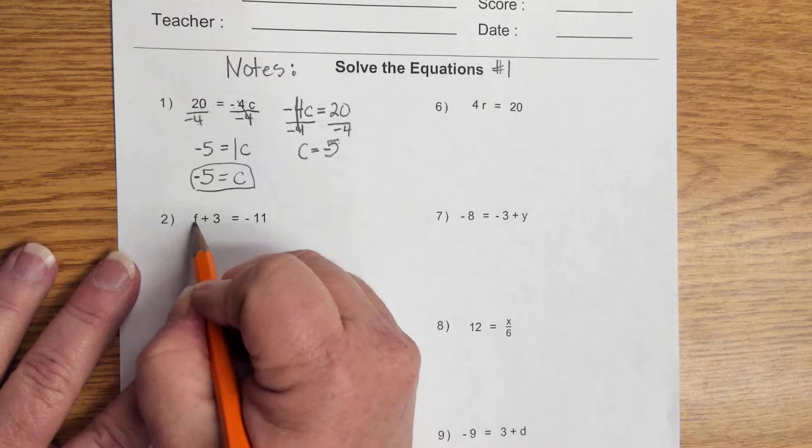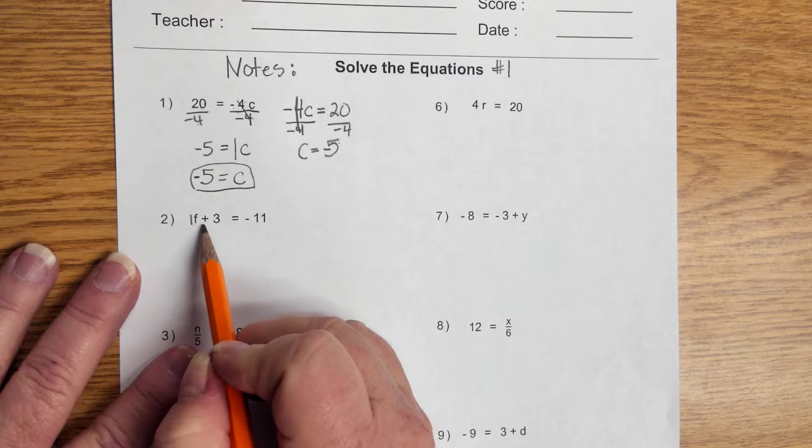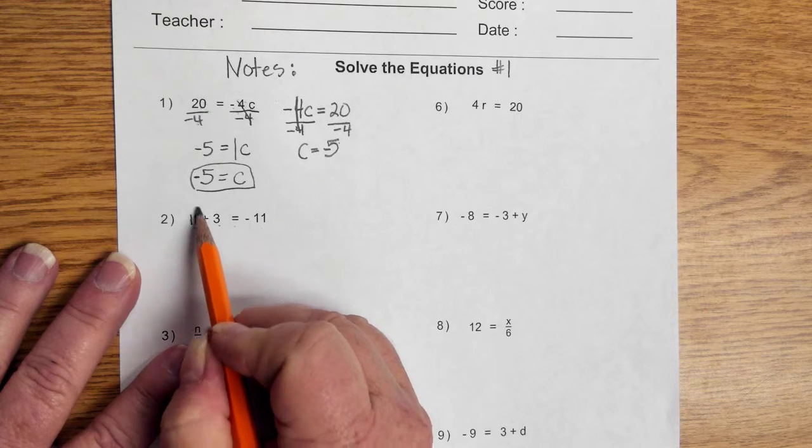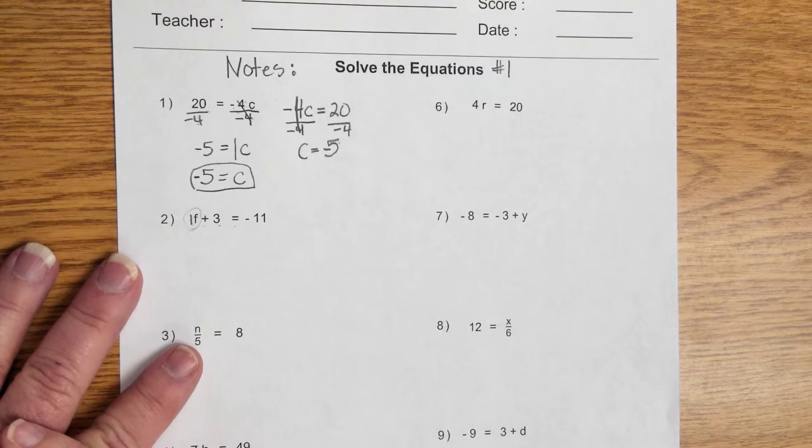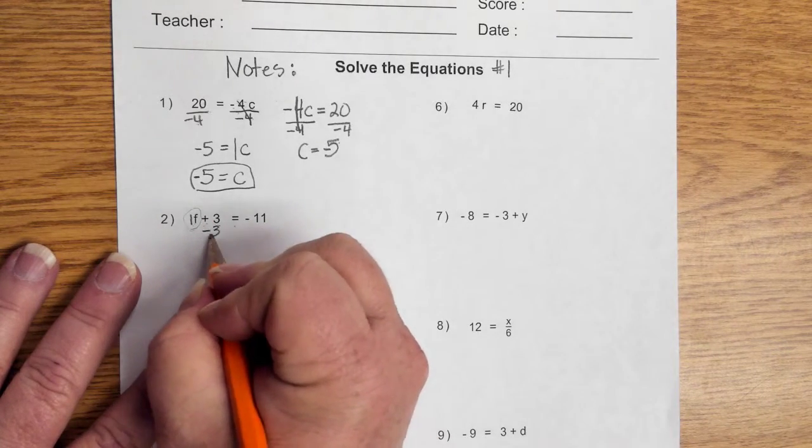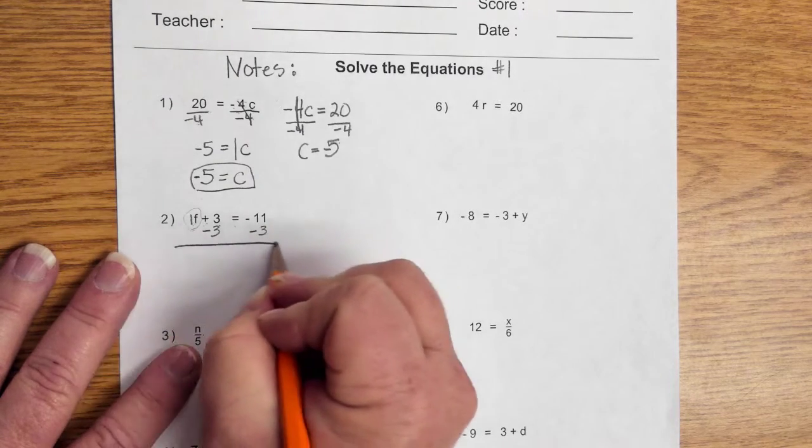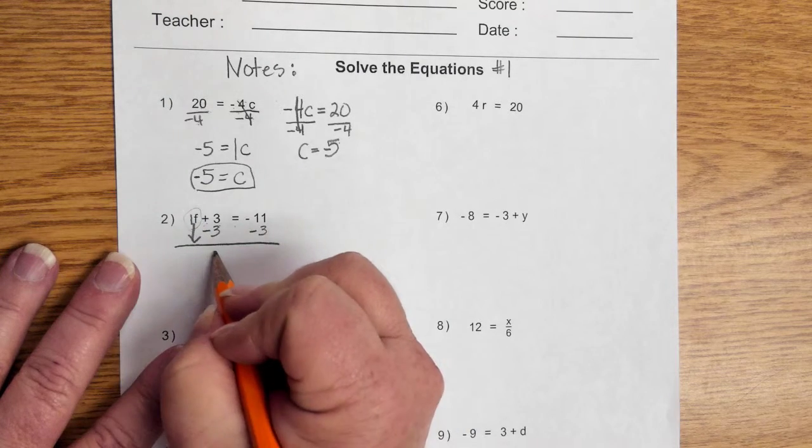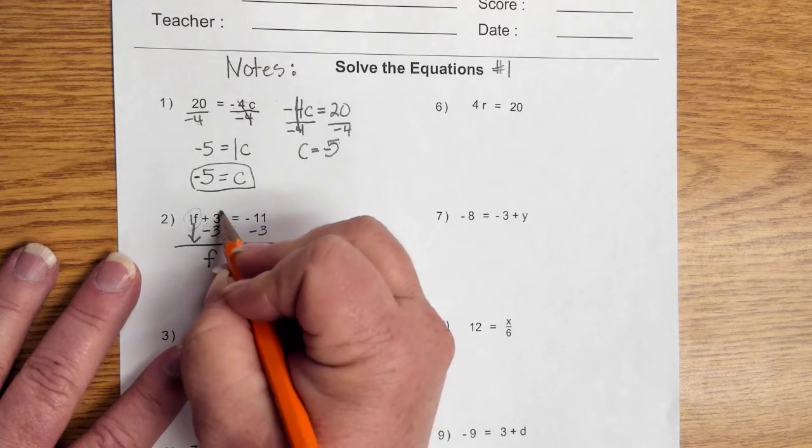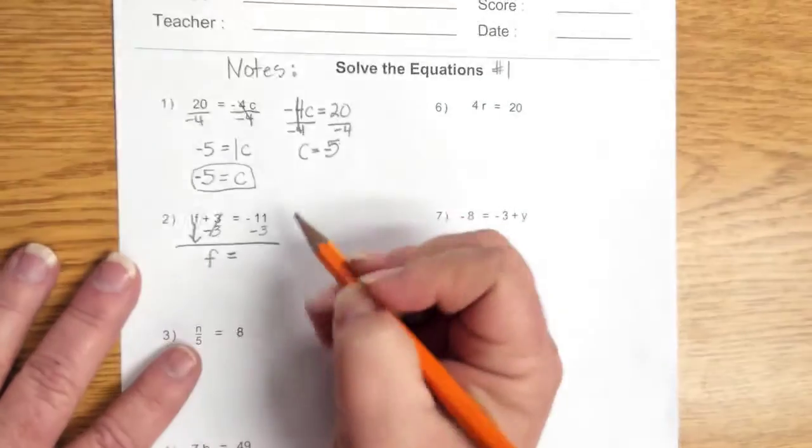Now, here we have, remember, in front of that f, we have a 1. It's the invisible 1. And we have f plus 3 equals negative 11. Well, this we need to get that variable isolated so it's all by itself. So, the opposite operation to adding 3 is subtracting 3. And if we do that to one side of the equal sign, we must do it to the other side of the equal sign. Therefore, we bring down our f or our 1f. This plus 3 and minus 3 cancel each other out and make 0. But we don't write the 0.